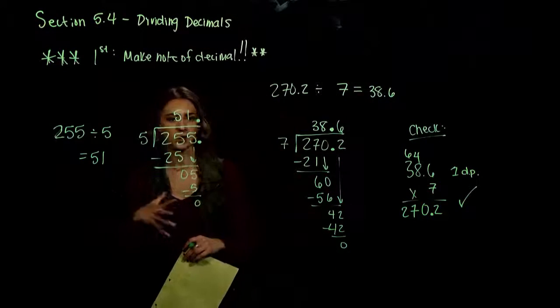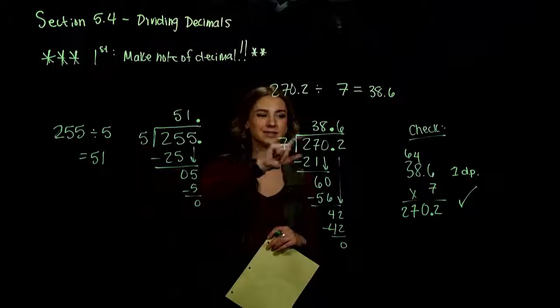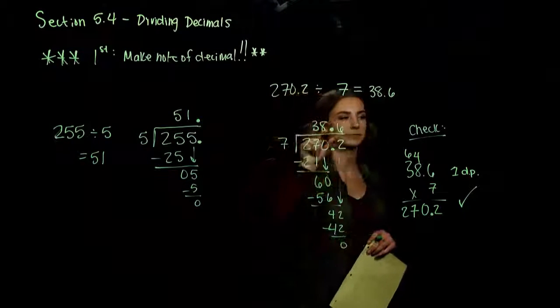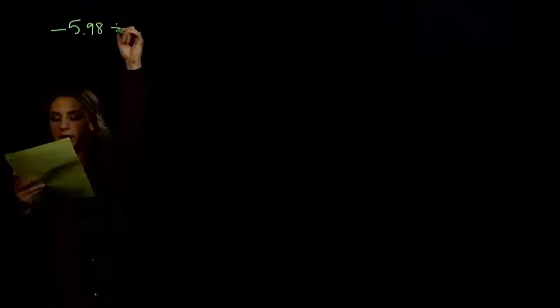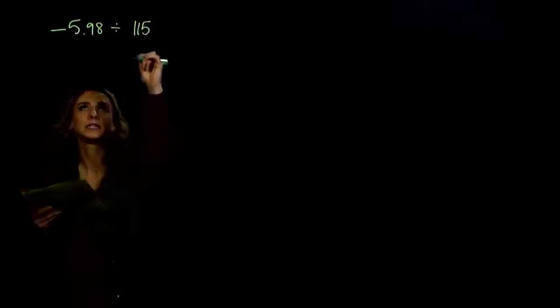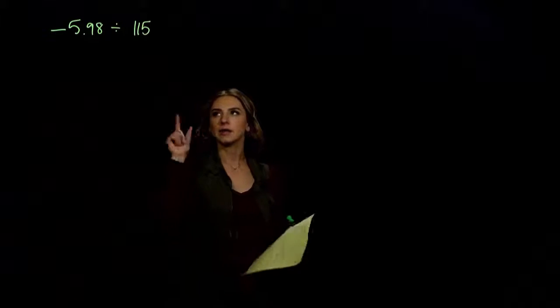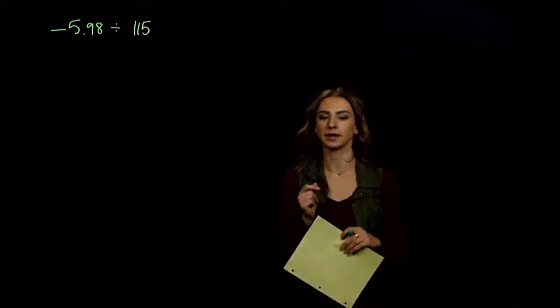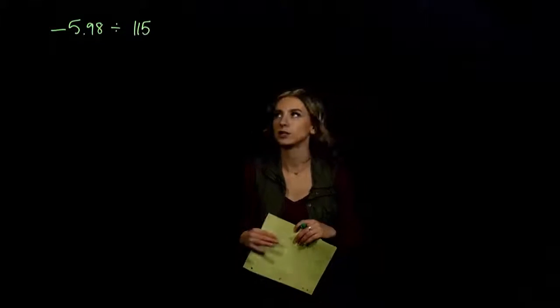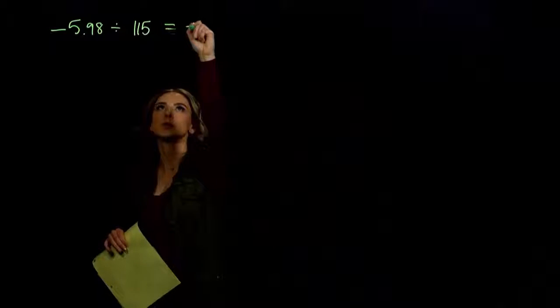All that's different is our very first step is to make note of where the decimal is inside our answer. So we're just going to practice a lot of different division problems. We'll do an application at the end. What about if we take a negative number, like negative 5.98, and we try to divide it by 115? I've got a negative divided by a positive — what type of number is that going to produce? Negative.